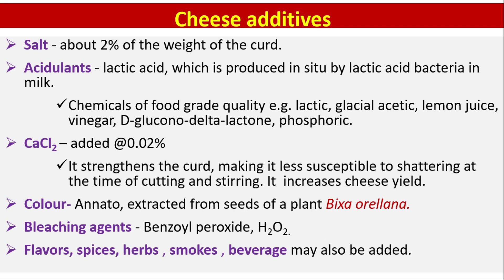Chemicals of food-grade quality used as acidulants include Lactic acid, Glacial Acetic acid, Lemon Juice, Vinegar, D-glucono-delta-Lactone, and Phosphoric Acid. Calcium chloride is added at 0.02%. Its function is to strengthen the curd, making it less susceptible to shattering at the time of cutting and stirring, and it also increases cheese yield.